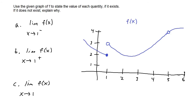For this first set of problems, we use the given graph of f to state the value of each quantity if it exists, and if it does not exist, explain why. For letter a, we have the limit of f of x — the entire graph in blue is f of x — as x approaches one from the negative direction. Looking at the graph as x approaches one from the left-hand side, the y value is two. So the limit as x approaches one from the left of f of x equals two.